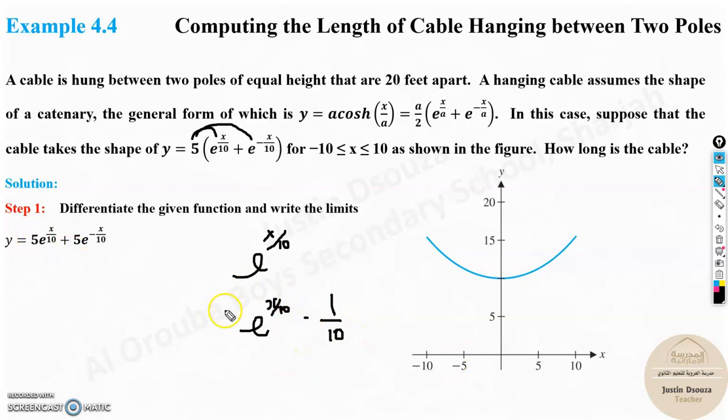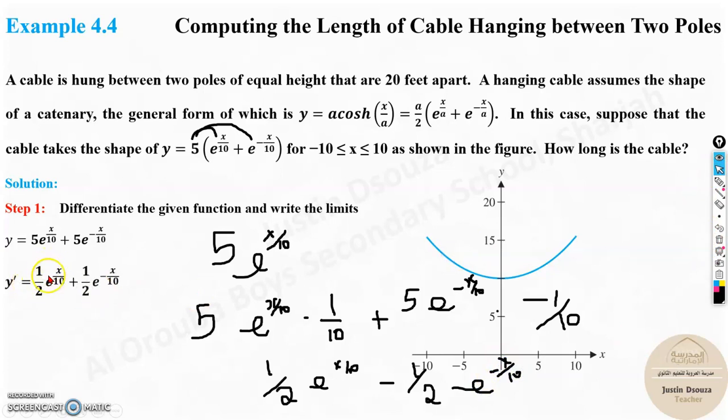Now derive this: 5 e^(x/10), so 5 as it is, e^(x/10) as it is, but multiply 1/10. Same thing with the other side—5 as it is, e^(-x/10), and multiply -1/10. When you simplify, it becomes 1/2 e^(x/10) minus the minus sign, which gives 1/2 e^(-x/10).